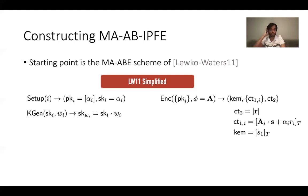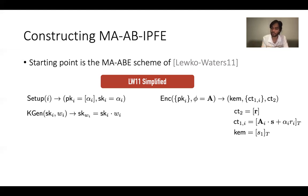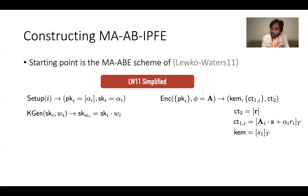The KEM value of this encryption system is simply the first element of the secret vector S, encoded in the target group. This is the key encapsulation value.